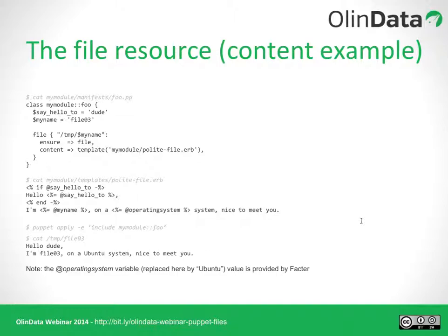You can imagine this gets very flexible for configuration files that have variables but a very static layout. A good example is Apache virtual hosts — the virtual host configurations always have the same layout, but the contents of each virtual host vary significantly. If you look at the Puppet Labs Apache module, you'll see a heavy use of ERB templates to fill the contents of virtual host configuration files. Note that the source attribute and content attribute are mutually exclusive — you cannot use both, you have to choose one.